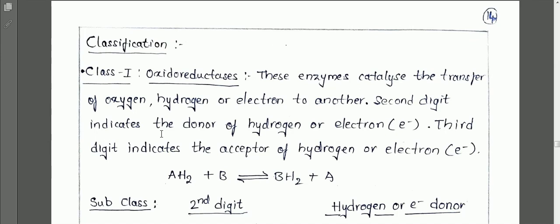For class one, the subclass indicates the donor of the hydrogen or electron. The transferred molecules are donated by some other components, and the donor molecules are indicated in the second digit, whereas the third digit indicates the acceptor of the hydrogen or electron.